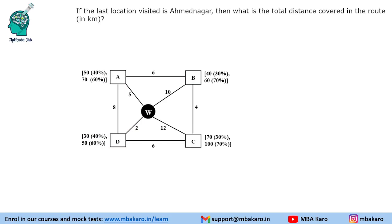Question 1: If the last location visited is Ahmednagar, what is the total distance covered in the route in kilometers? The last location visited is given as Ahmednagar, which means the demand at Ahmednagar should be the least. If Ahmednagar had 70 demand it would be higher than other values, so Ahmednagar should have a demand of 50. All other locations should have demand of 50 or more — D will have demand of 50, B will have demand of 60, and C can have any demand. So the person will first visit C because C has the highest demand.